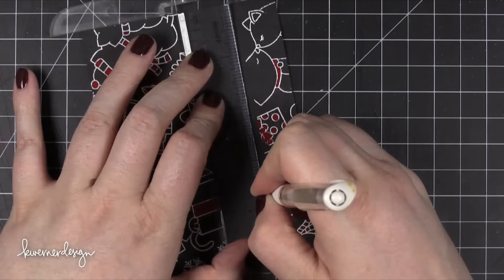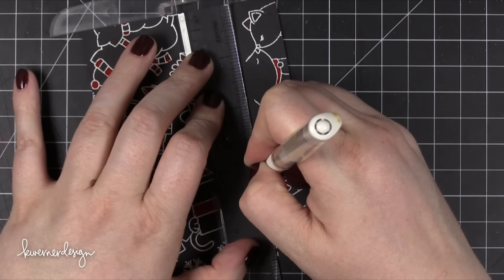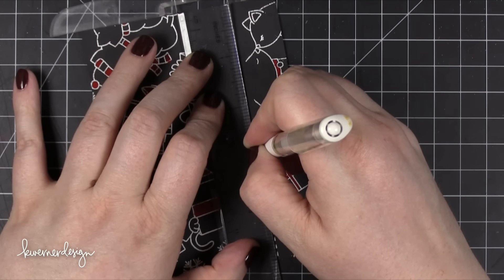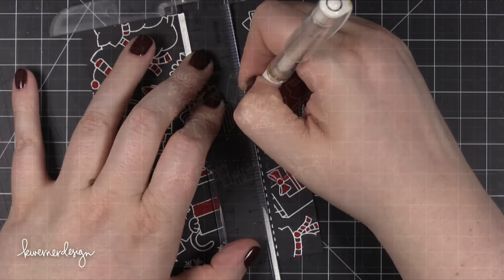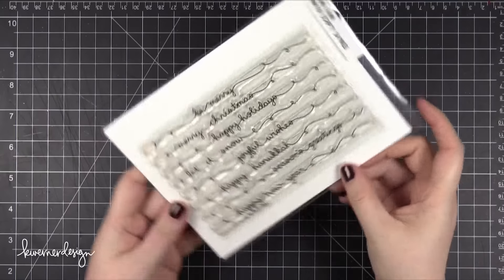So then I switched to a different white gel pen because I have two white gel pens and I use them for different things. The first one was a Gelly Roll pen and I used that because it has a little bit of a finer line. Now I'm using a Uni-ball Signo Broad gel pen to put in some dash lines.